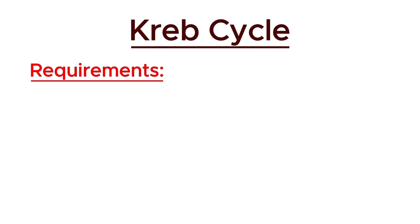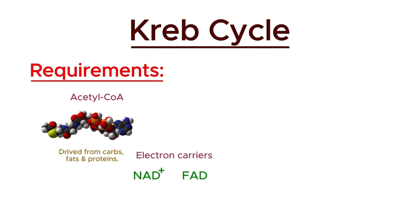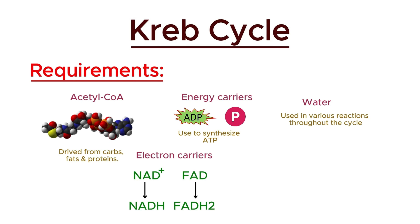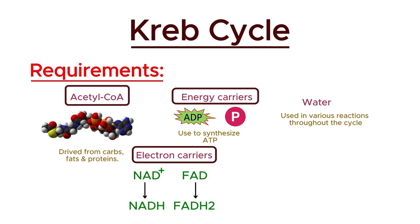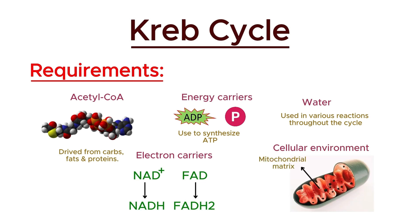Before proceeding to the steps of the Krebs cycle, let's see what is required for the process. Acetyl-CoA, derived from the metabolism of carbohydrates, fats, and proteins, is essential. We also need NAD and FAD, which are electron carriers that get reduced to NADH and FADH2. Additionally, ADP and inorganic phosphate are needed for ATP synthesis. Finally, water is used in various reactions throughout the cycle. So to recap, for the Krebs cycle, acetyl-CoA, electron carriers, ADP, inorganic phosphate, and water are needed, as well as the mitochondrial matrix as the cellular environment.